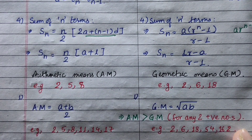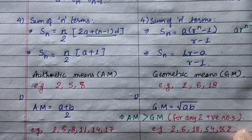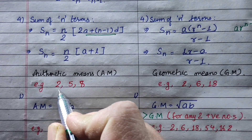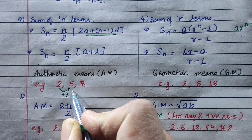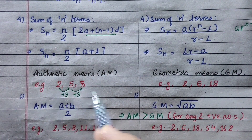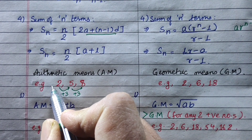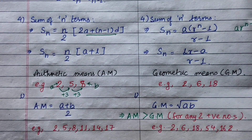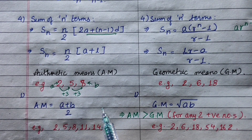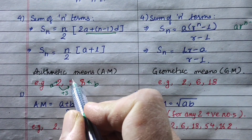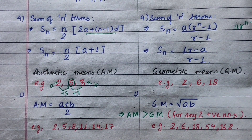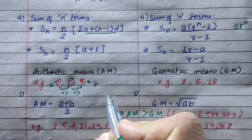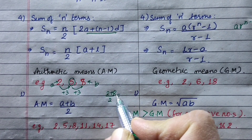Now let's discuss arithmetic mean and geometric mean. For arithmetic mean, suppose we have three numbers in arithmetic progression: 2, 5, 8. The common difference is 3. The arithmetic mean is calculated as 2 plus 8 by 2, which is 10 upon 2, equals 5. So the middle term 5 is the arithmetic mean.